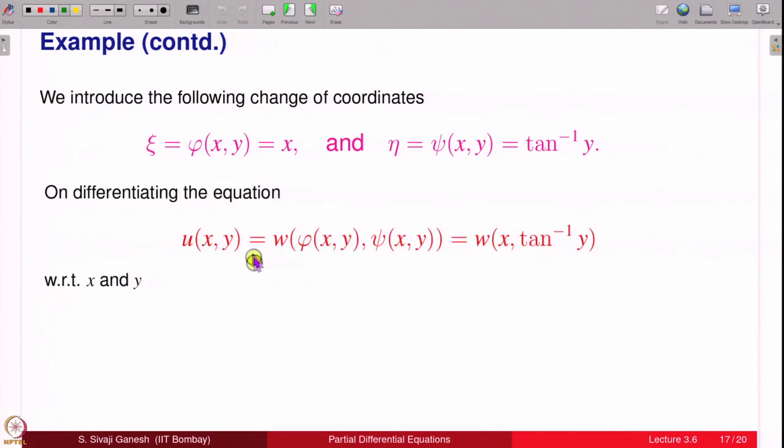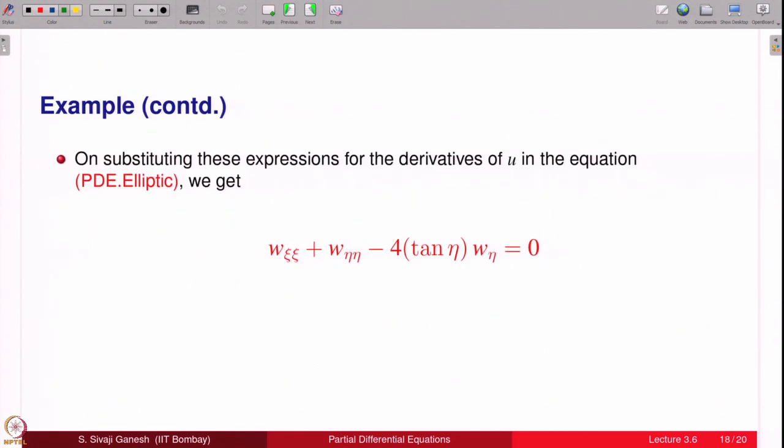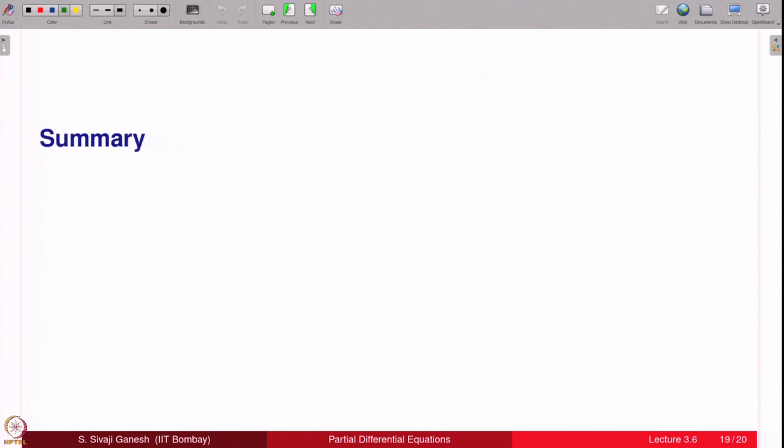You propose u(x,y) = w(x, tan⁻¹(y)). Differentiate: u_x—x appears only here—so it is w_ξ and derivative of x is 1. u_y will be w_η and derivative of this is 1/(1 + y²). You can continue like that, compute the derivatives, go back and substitute in the given equation. We get this. That is a canonical form of the given PDE.